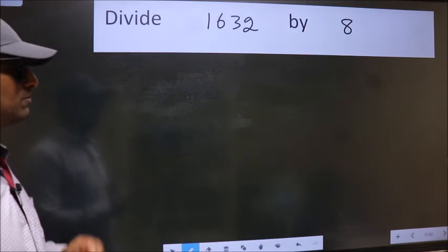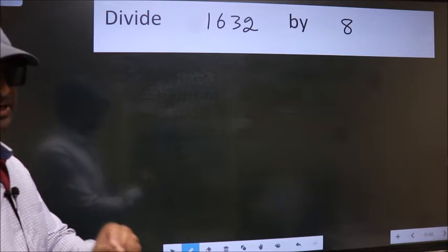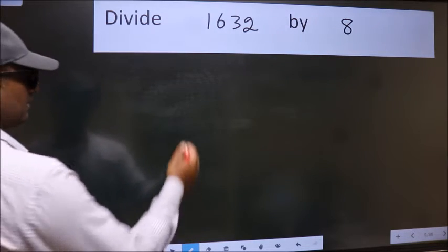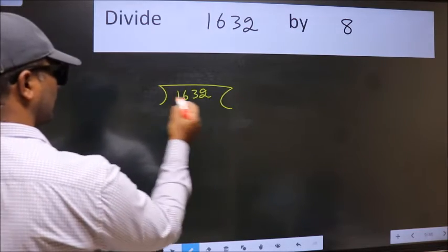Divide 1632 by 8. To do this division, we should frame it in this way: 1632 here, 8 here.